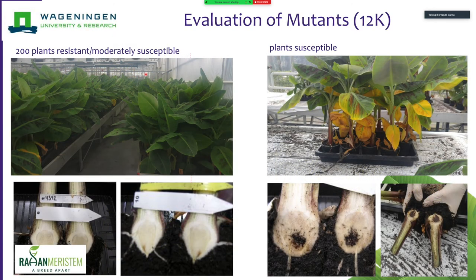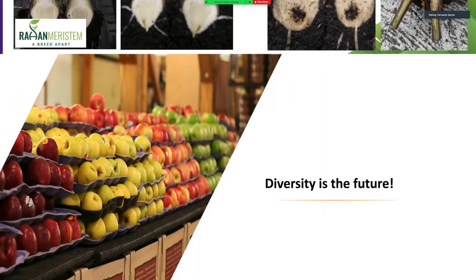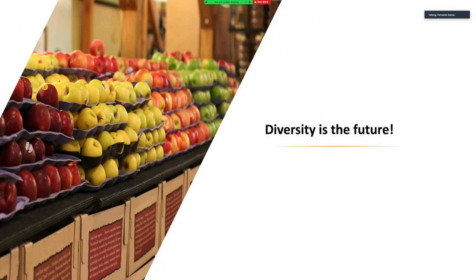Another area I worked on at university was selecting resistant individuals from a mutagenesis program by Rahan Meristem from Israel. Twelve thousand plants were evaluated and we could select 200 resistant plants, which is also promising and surprising. For us, diversity is the future — what we observe in apples, with many diverse varieties, is what we would like to see in bananas.